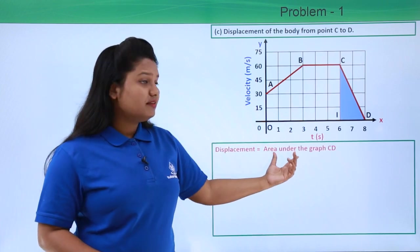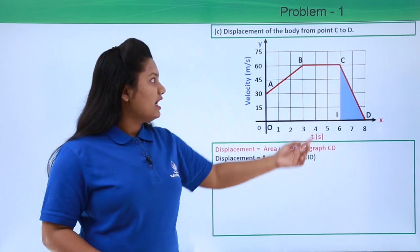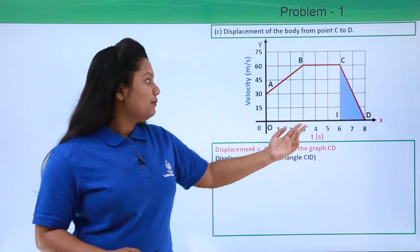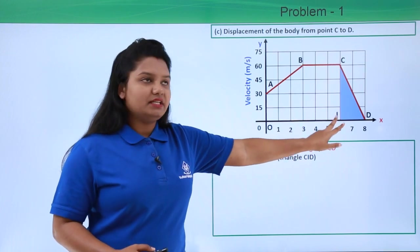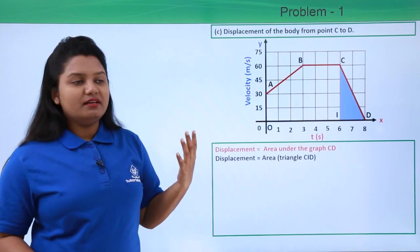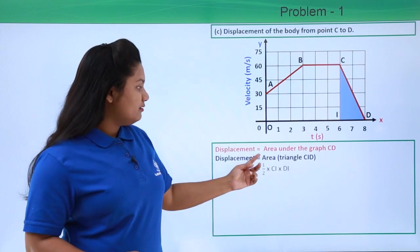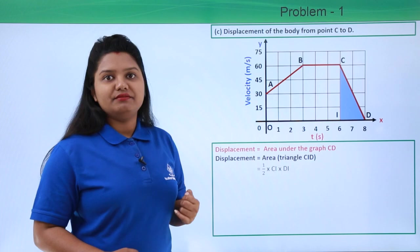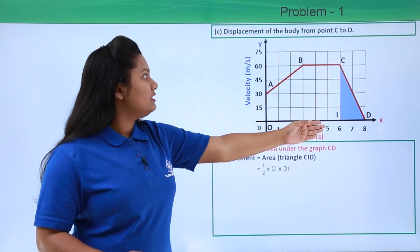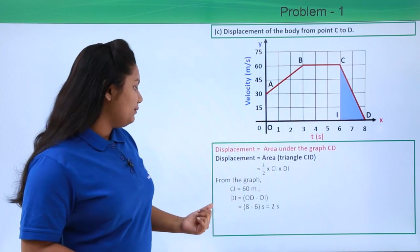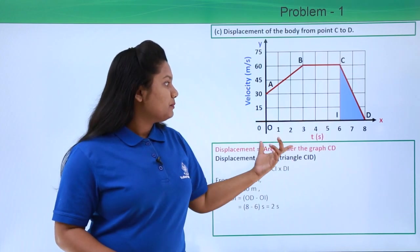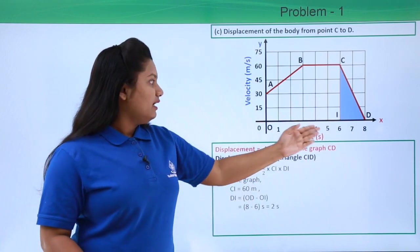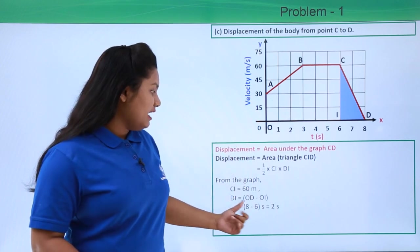The displacement is the area under graph CD, which equals the area of right triangle CID. Using the formula half times base times height, DI is the base and CI is the height. CI is clearly 60 meters per second from the graph. DI equals OD minus OI, where OD is 8 seconds and OI is 6 seconds, so DI equals 2 seconds.